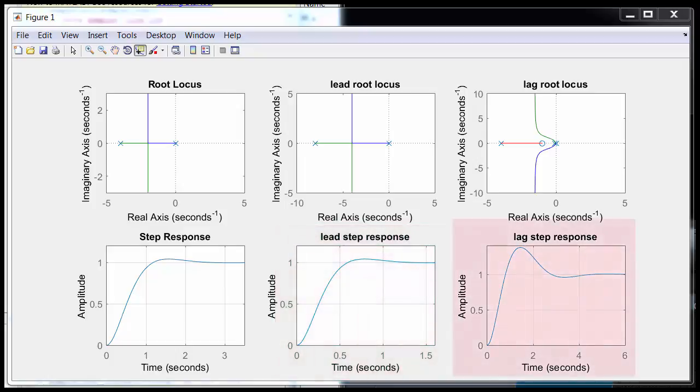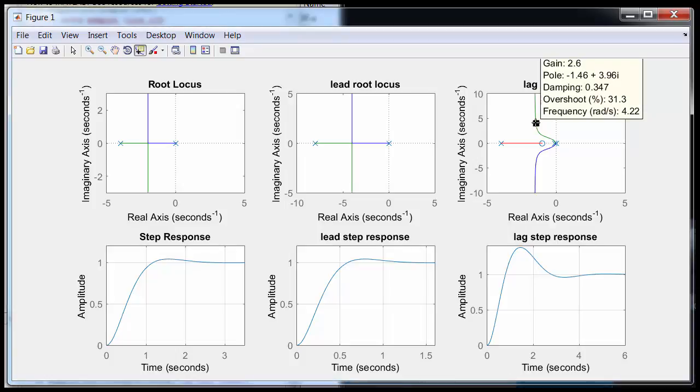And finally we have the lag compensated system. And notice that the steady state error is now at 1 but the settling time is actually a little bit worse. You should also notice that with the lag compensated system, if you take a look at the root locus, there is actually no way on this root locus to get zeta equal to 0.707. The best you're going to get is about 0.537. So you're going to have to design another lead or lag compensator in order to compensate for that to get the zeta equal to 0.707.